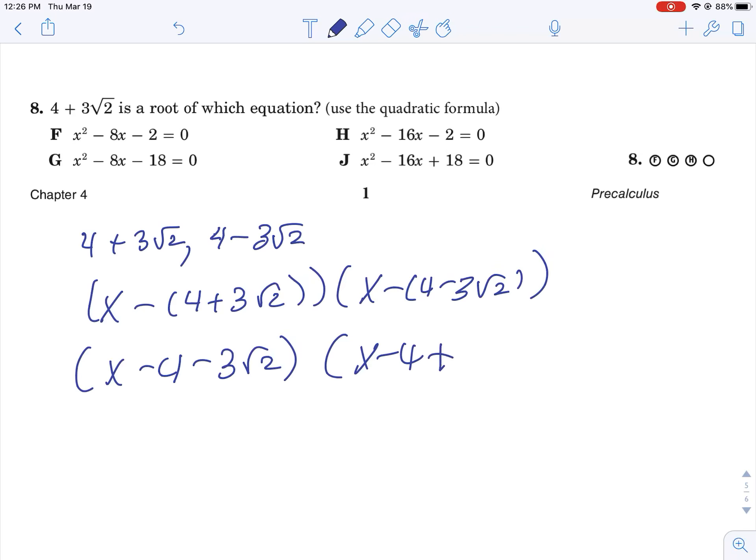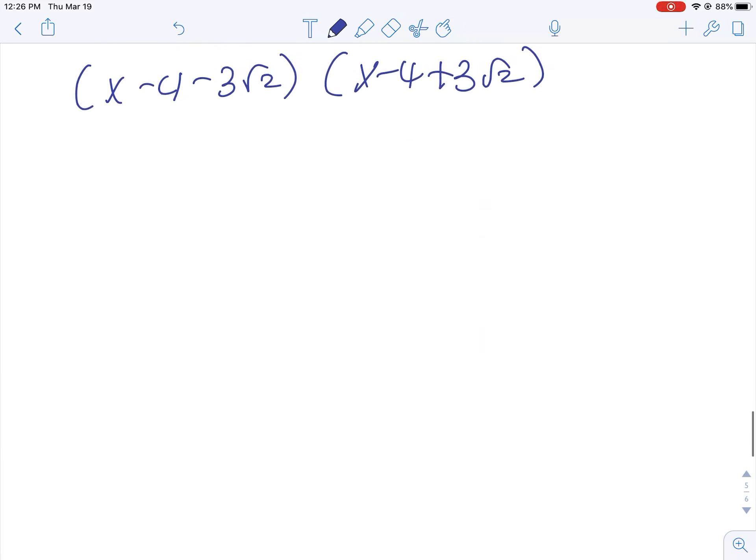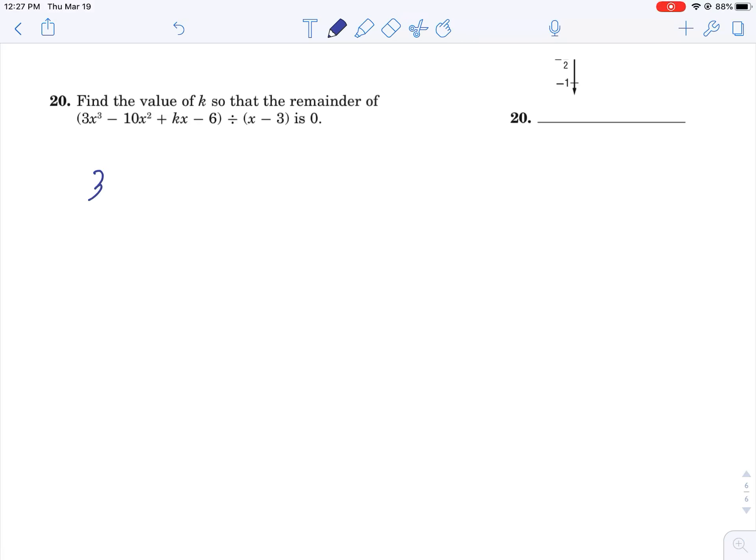You're going to FOIL all that out, and then the answer will reveal itself. Let's take a look at number 20. For number 20, what value will make the remainder 0? What I did is I set up a synthetic division box.